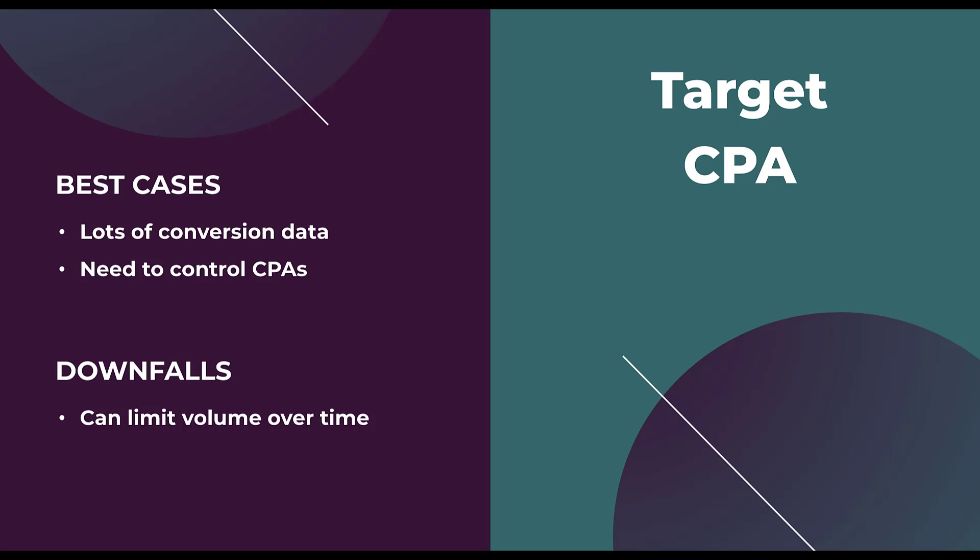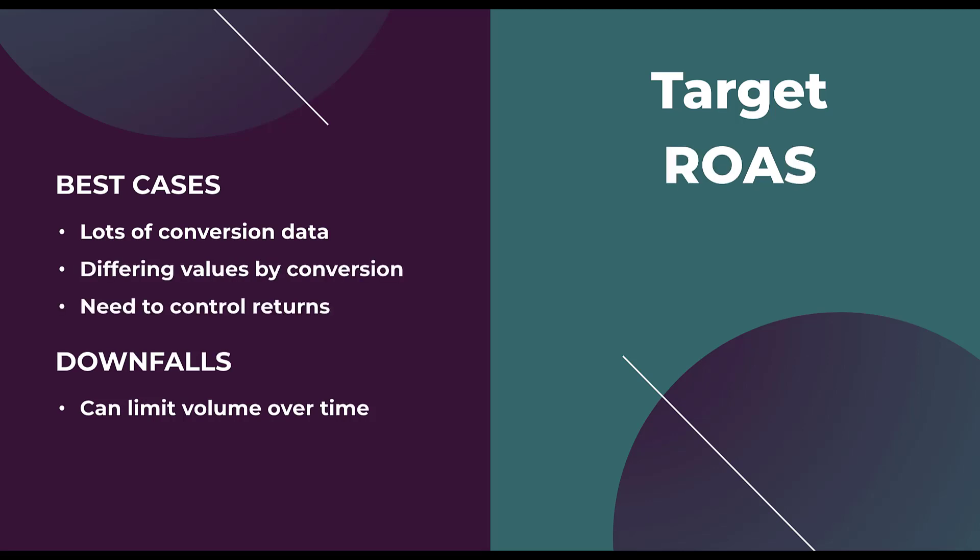If you are thinking about using Target CPA, that volume limitation is something you'll need to keep in mind. For Target ROAS, the volume limitation is also a consideration. It's easier for Google to be more conservative and serve only to people it feels more confident will convert at your goal ROAS or CPA. But it can work really well if you have lots of conversion data, need to control your returns, and have differing values per conversion — it really helps balance those out over time.